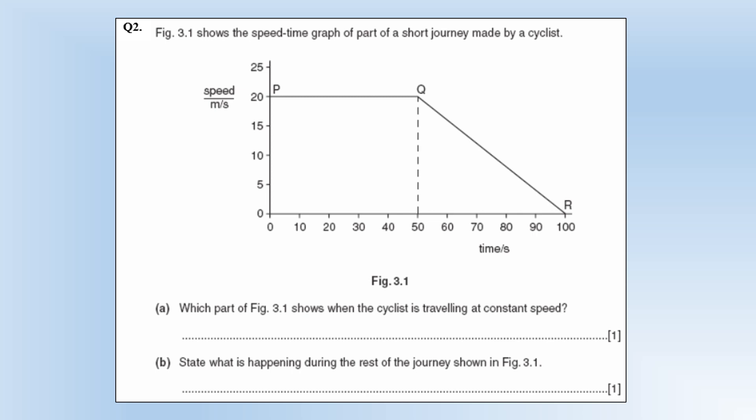Let's take a look at some practice questions on force, motion and energy. The diagram shows a speed-time graph of a part of a short journey made by a cyclist. From P to Q we're going at constant speed of 20 meters per second, and then at Q it got a constant deceleration up until 100 seconds.